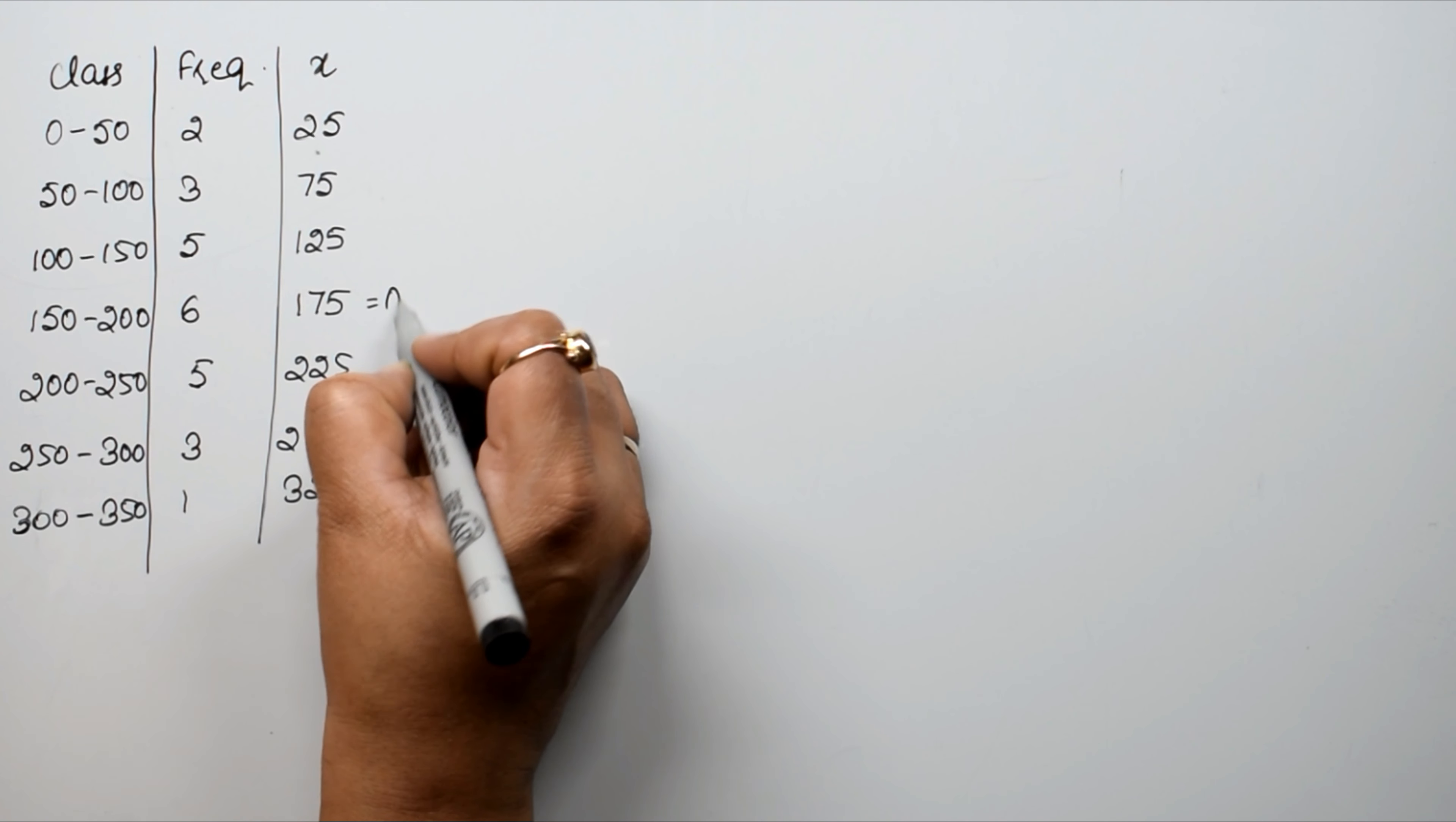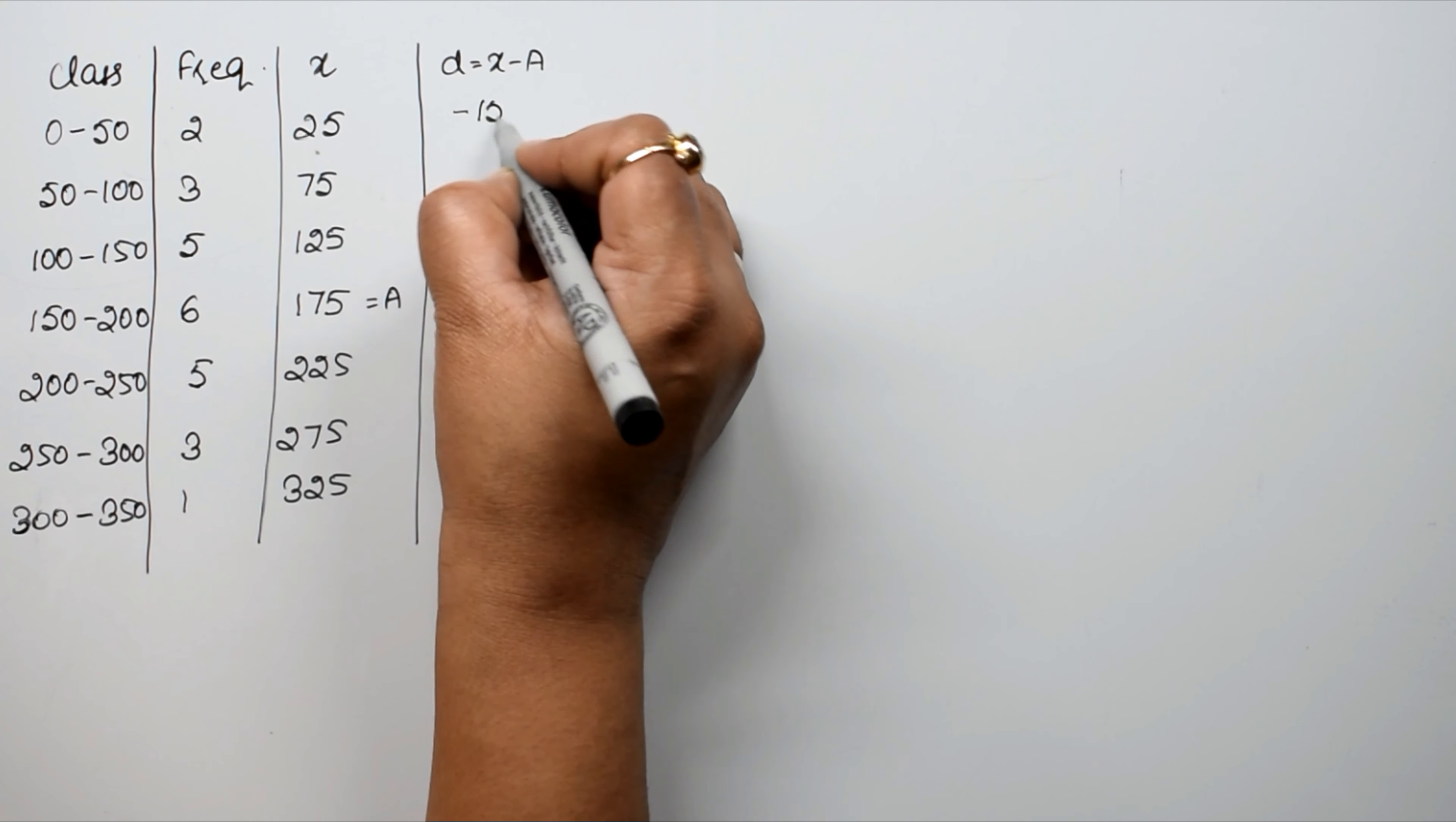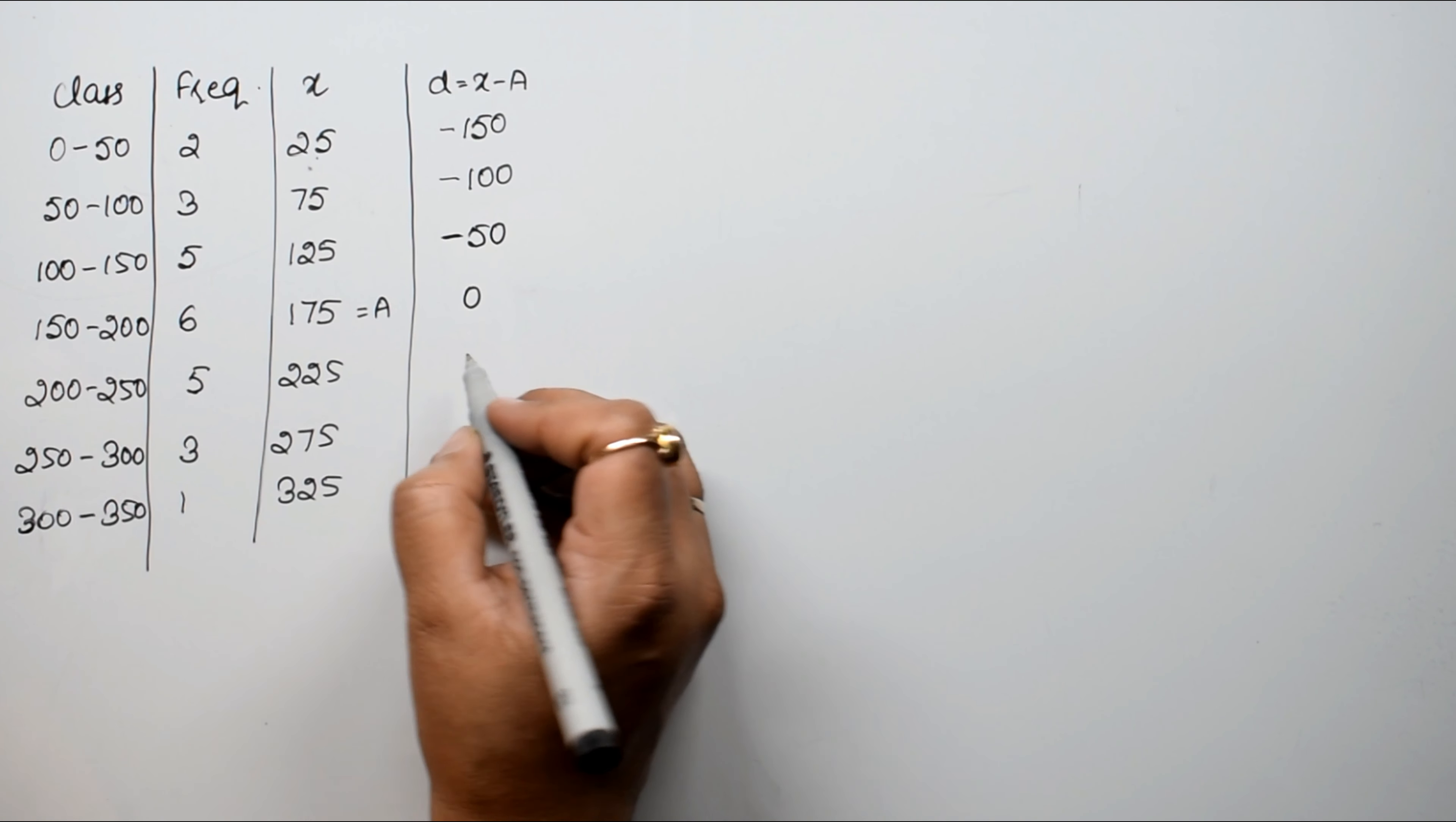Now we have to take the assumed mean. So our d is coming out. How do we take x minus a? That means minus 150. So it is minus 150, minus 100, minus 50, 0.